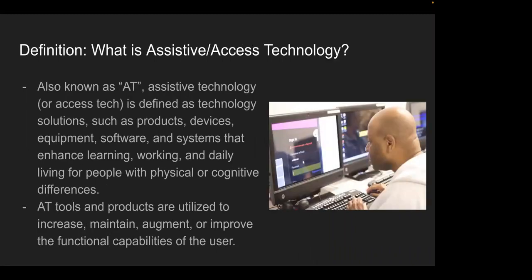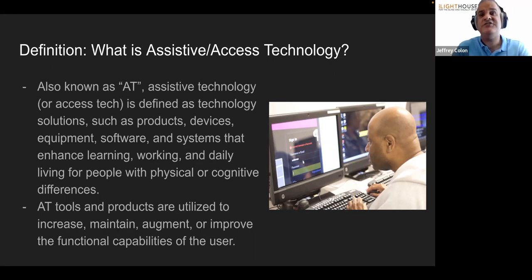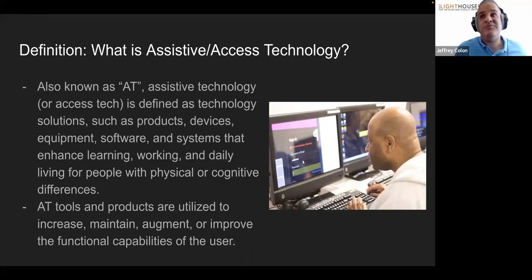When we talk about access tech or assistive tech, these are devices, programs, services, or tools that allow you to improve or maintain the capacity of people with disabilities. Among those products, we can find screen readers, screen magnifiers for low vision users, and all kinds of other devices. We'll be talking about a few of them today.